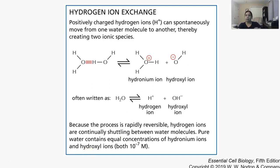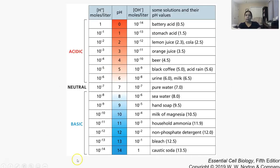Anything below seven is going to be acidic and anything above seven is going to be basic. Our stomach acid is highly acidic — it's a strong acid. Black coffee, urine — all of those have acidic properties. On the other hand, seawater, bleach, caustic soda — all those things are basic. So it goes from zero to 14, with zero being extremely acidic, 14 being extremely basic, and neutral being water at pH seven.